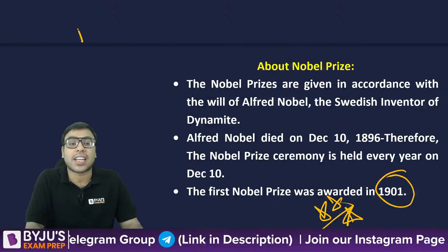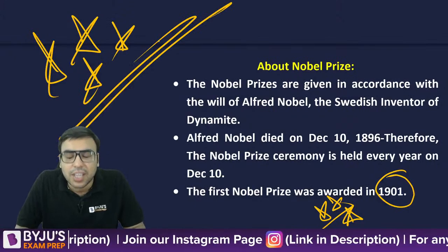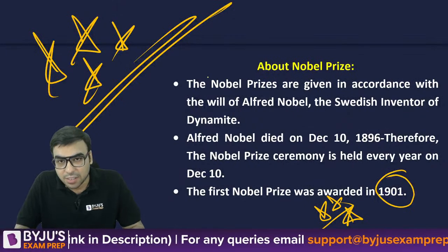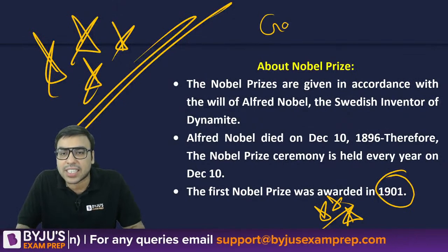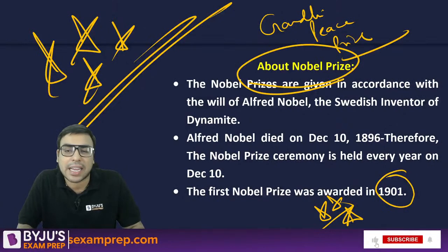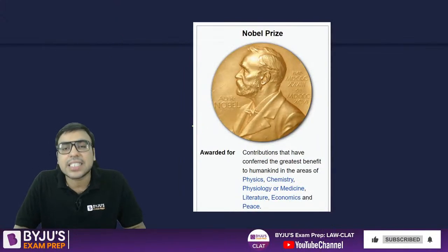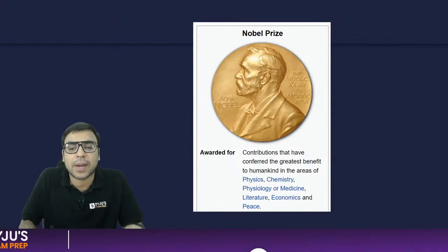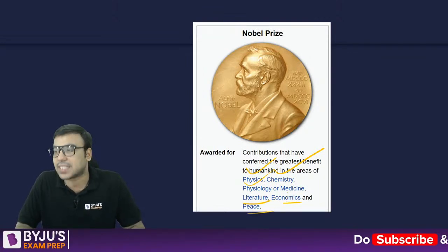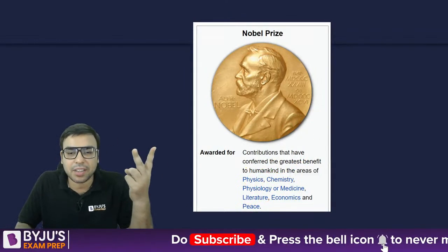There are good chances questions can come from this section — they have asked previously also. The Nobel Prize is given in six fields: Physics, Chemistry, Physiology or Medicine, Literature, Economics, and Peace.